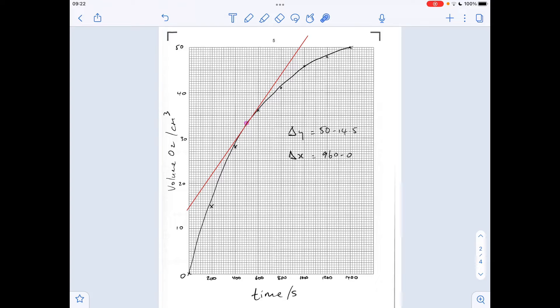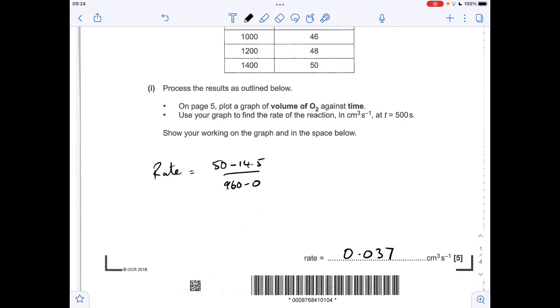So the rate at 500 seconds, we draw a tangent to the curve at 500 seconds. So that's my red line there. Work out the change in y and the change in x. And the rate is the gradient at that point. So that's the change in y divided by the change in x. So using my results, I'm getting a gradient, a rate of 0.037 centimeters cubed per second. Now, because tangents can vary, there's a range allowed in the question. I've just got in on mine. So I'm right on that lower limit there. But the range was my answer up to 0.047.